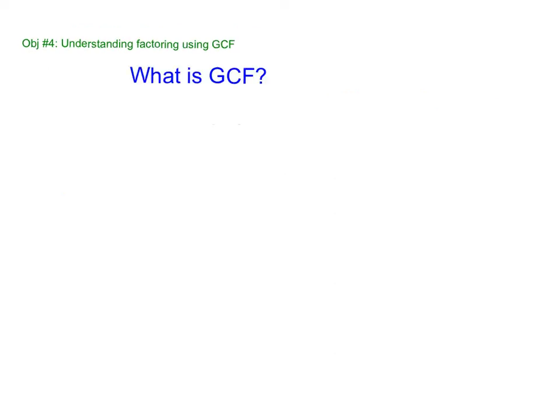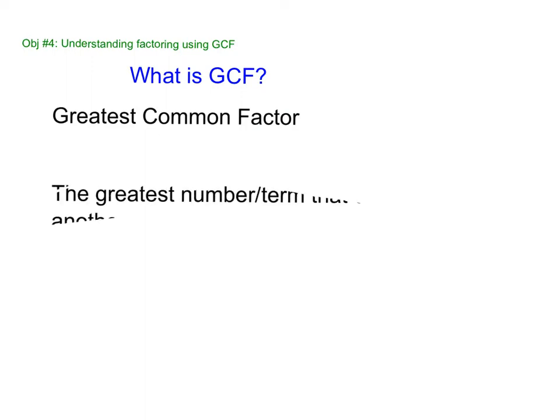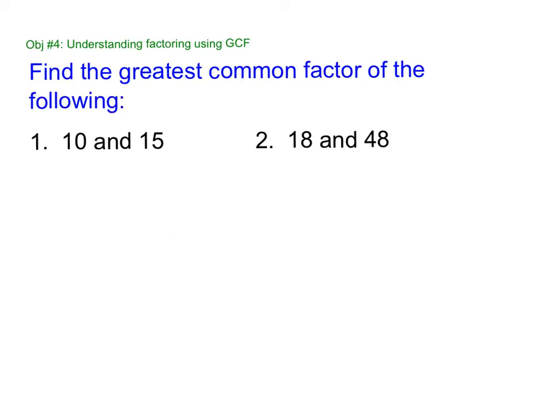Okay, so what's GCF? Most kids remember what it stands for and that's greatest common factor, but what is it? It's the greatest number or term that divides into another number or term. So typically, what we do is we have two numbers and we'll see what's the GCF of the two numbers. So for example, what is the GCF of 10 and 15? That's an easy one. Most of you should be able to say five.